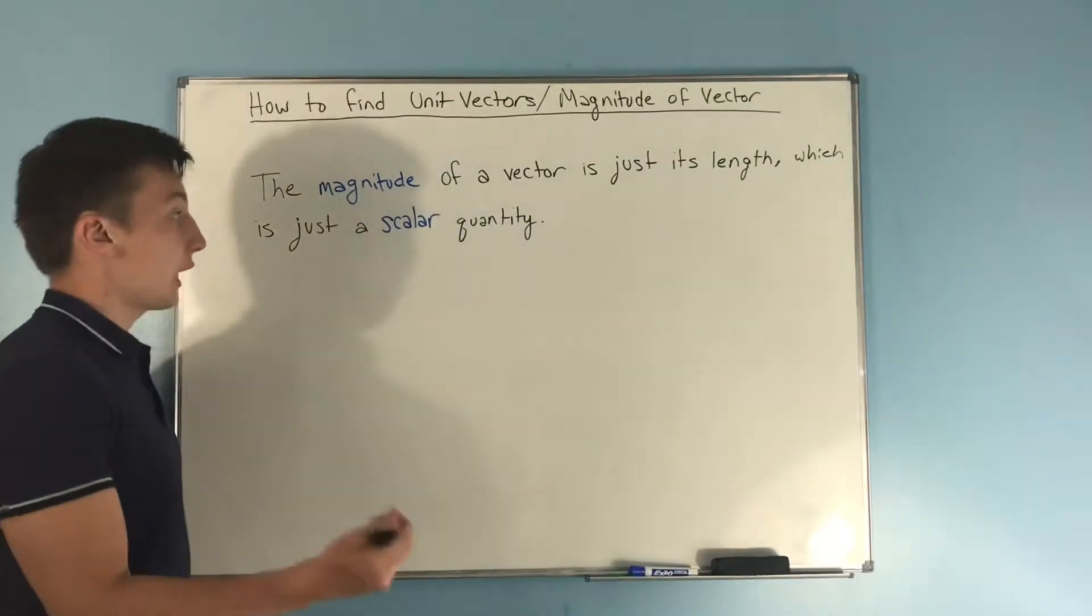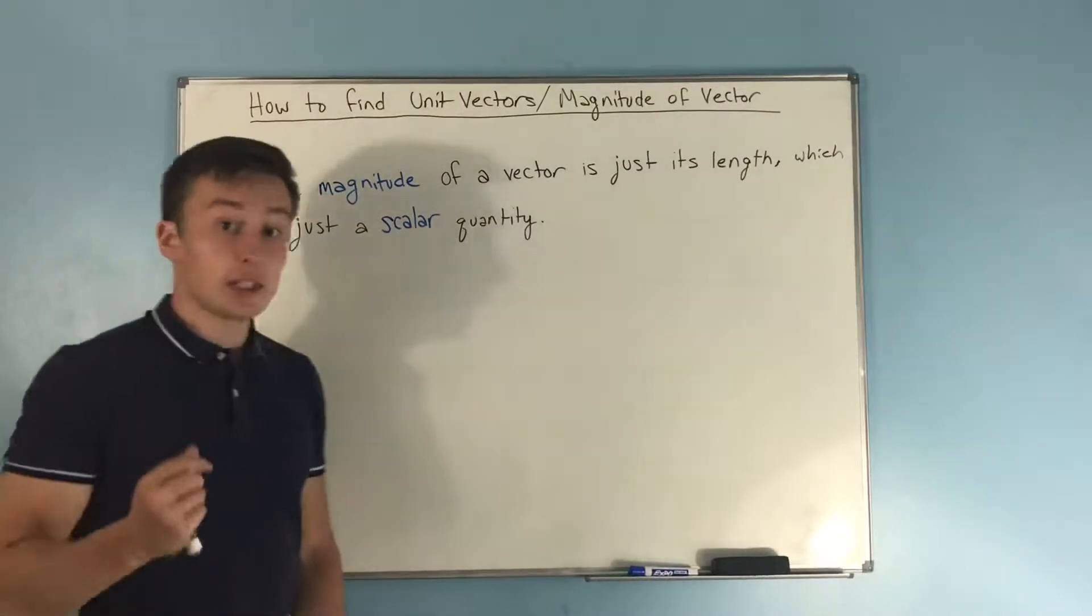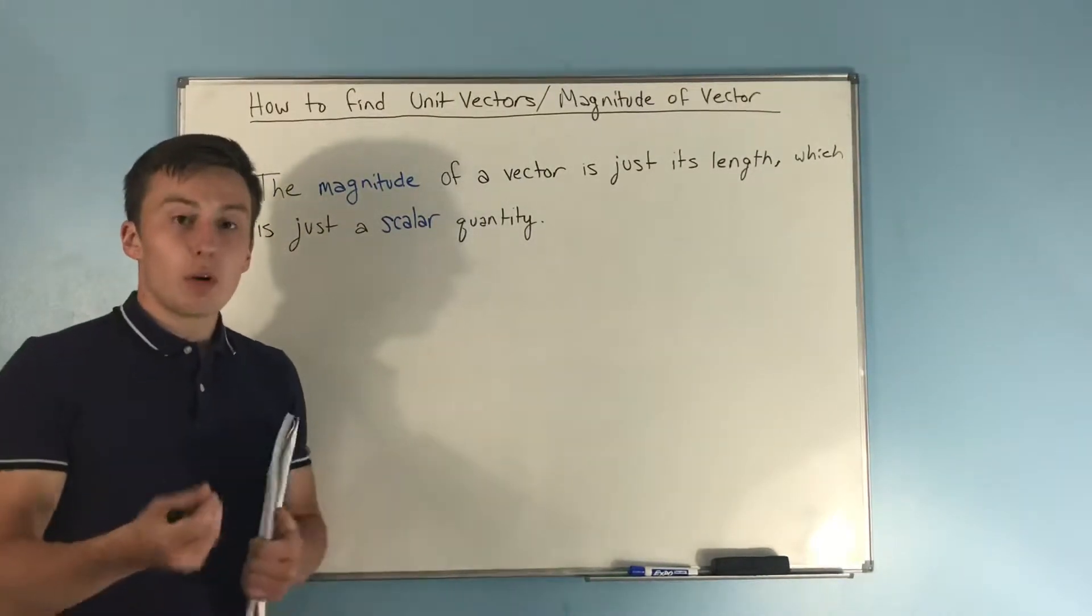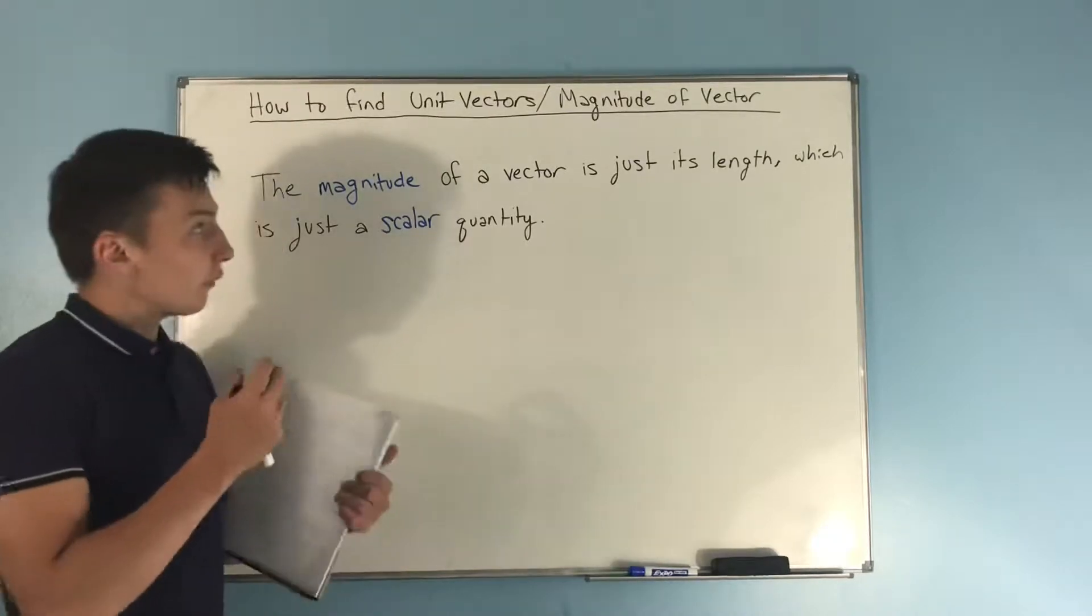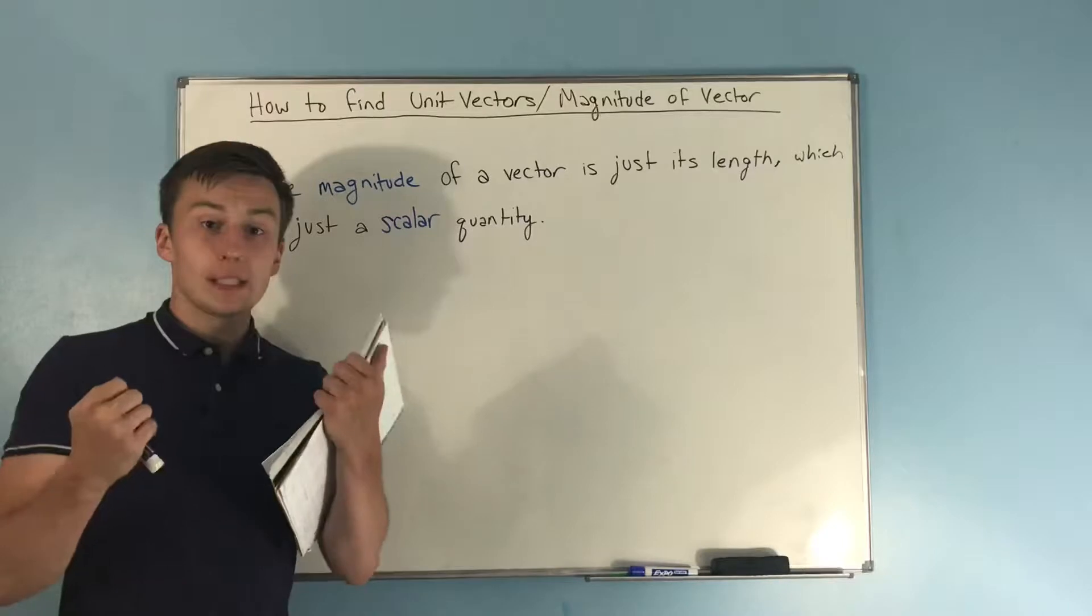Well, the magnitude of a vector is just the vector's length, which is a scalar quantity. It's just dealing with length, it's no longer dealing with direction. So remember how a vector represents magnitude and it represents direction.